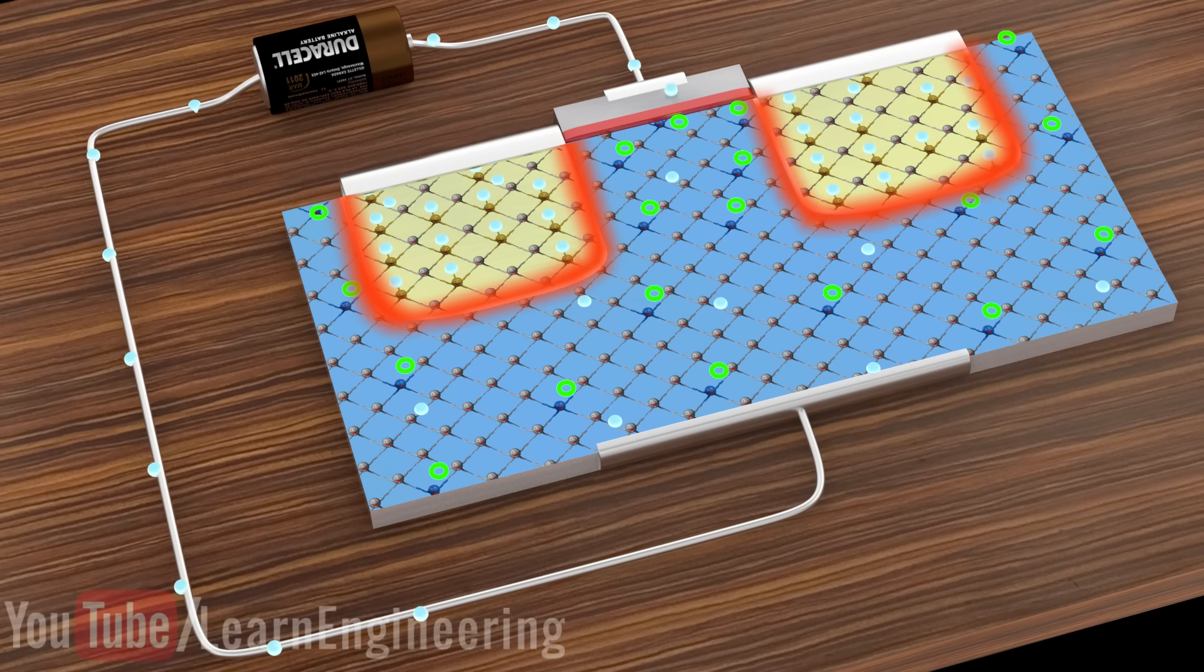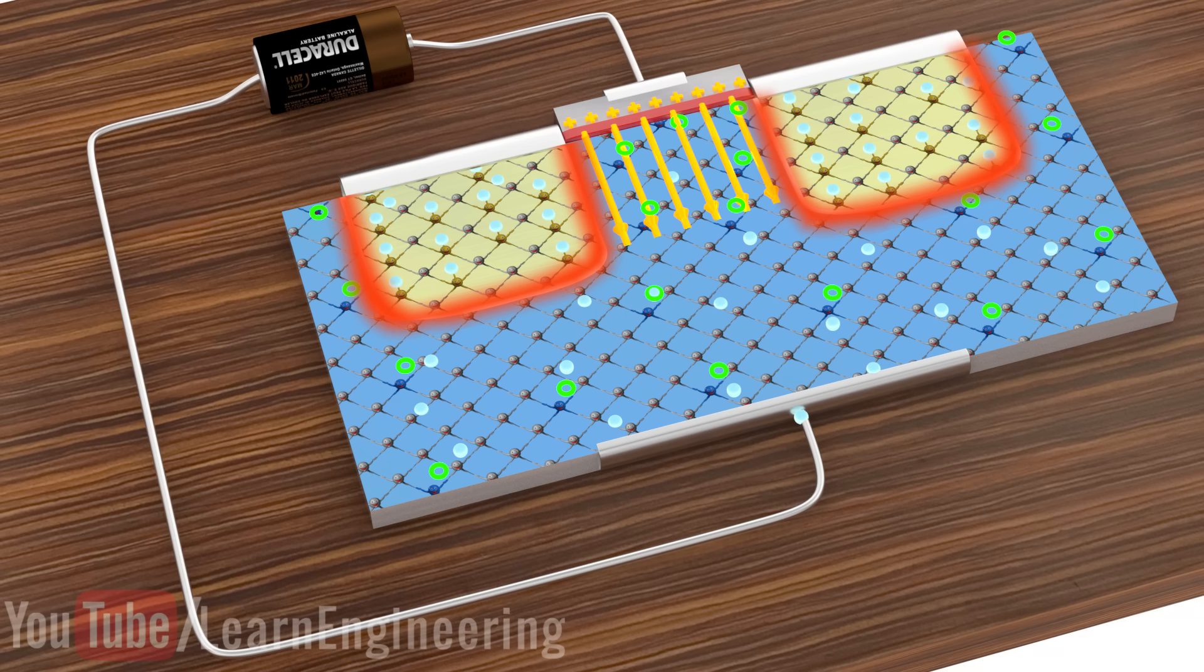In a MOSFET, these electrons will be dispersed into the P-substrate. The positive charge generated on the metal plate, due to the electron displacement, will generate an electric field as shown.